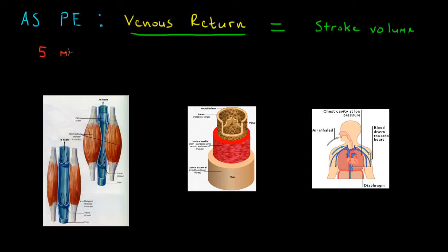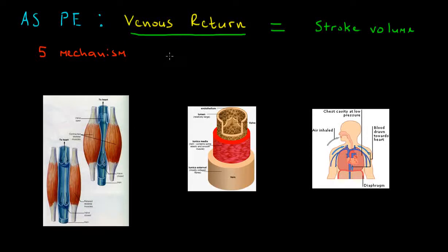These five mechanisms allow us to ensure that we get good venous return — good blood back to the heart in good quantities. When we start exercising, we start firing blood towards the lower parts of the body, like the legs during running or cycling. Firing blood downwards is relatively easy due to gravity and high arterial pressure, but getting it back up from the legs to return it to the heart requires certain mechanisms.